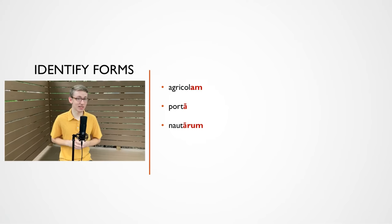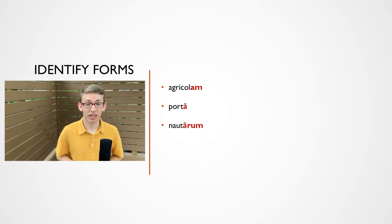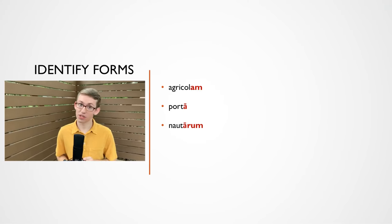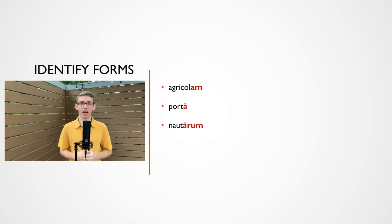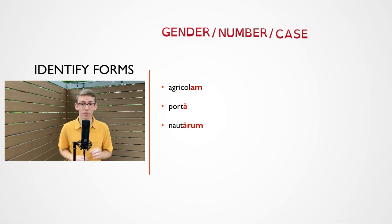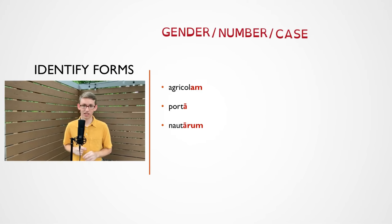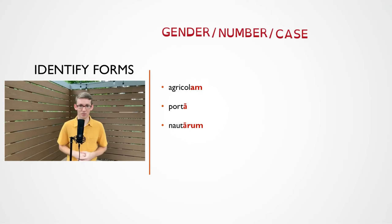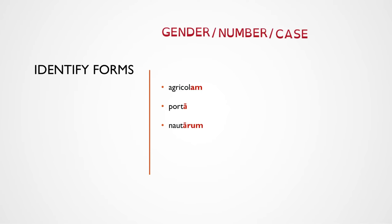We're getting really close to translation, but we're not quite there yet. First we have to practice an essential part of translation, which is called identification. To identify something means to find all possible forms of a noun — meaning finding its gender, number, and case. Right now we're just going to practice finding its number and its case for these three nouns right here. So let's see if we can get into some practice finding the gender, number, and case of all three of these nouns.